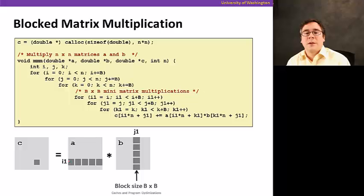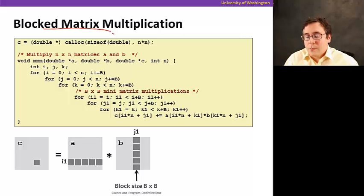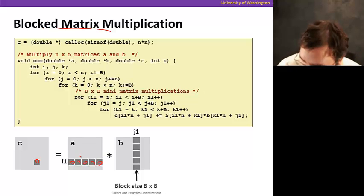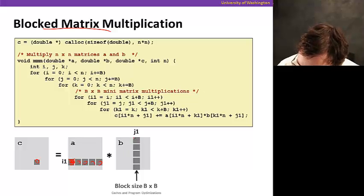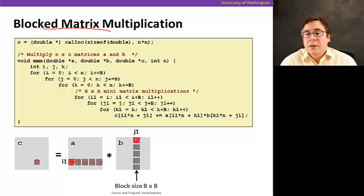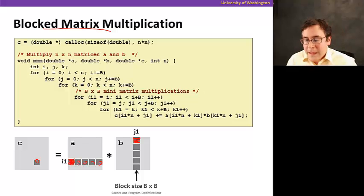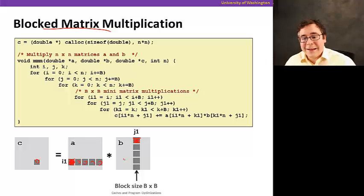One way to solve this problem is to do what we call blocked matrix multiplication. Instead of doing an entire row and entire column, we do this block by block. When we read a block of A, we read a subregion of it, and for B we read multiple rows but only a subset of each row — such that both blocks stay in cache.